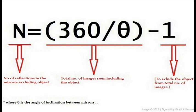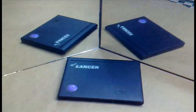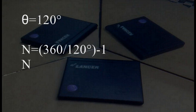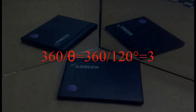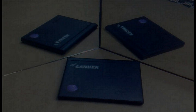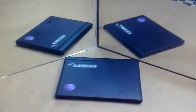Starting the explanation with two mirrors inclined at 120° and an object between them: θ = 120°, so the formula gives n = 2. The value 360/θ gives 3, which is the total number of images including the object, and n = 2 is the number of reflections in the mirror, excluding the object.